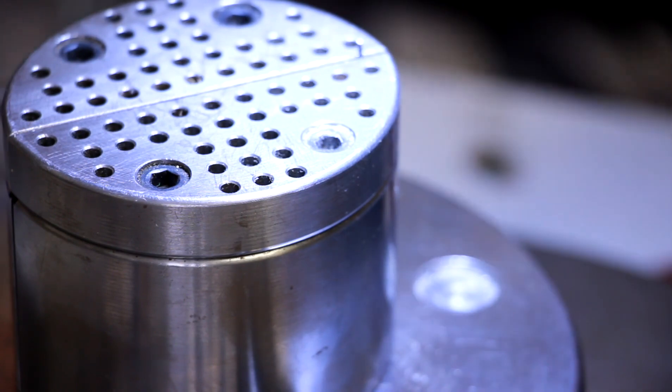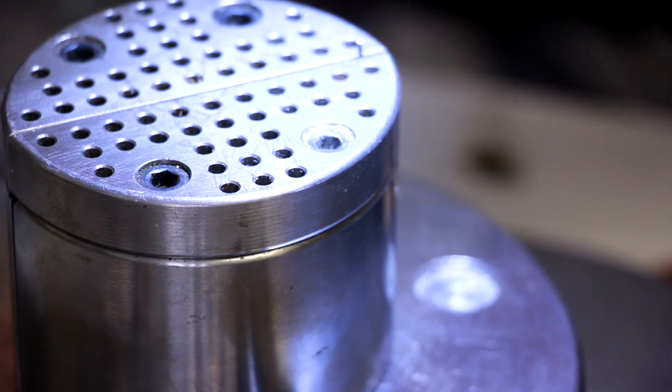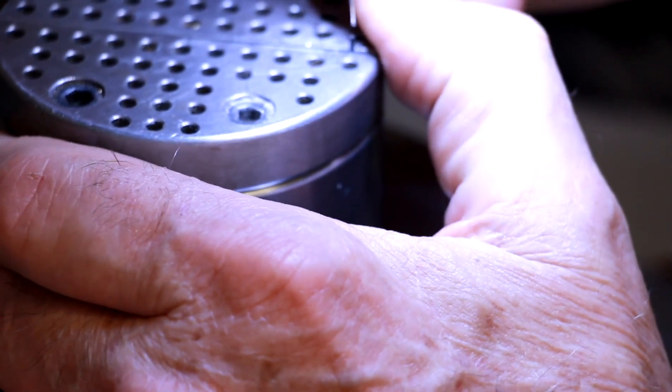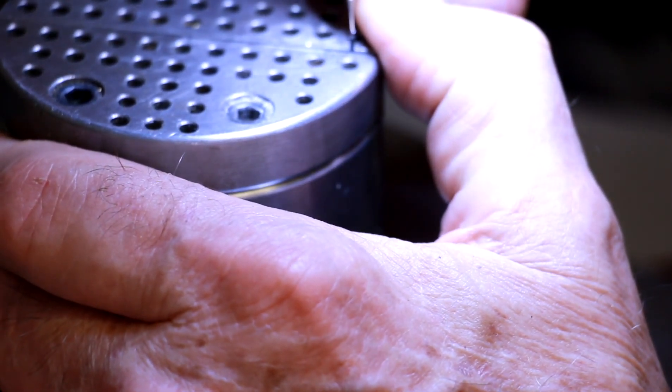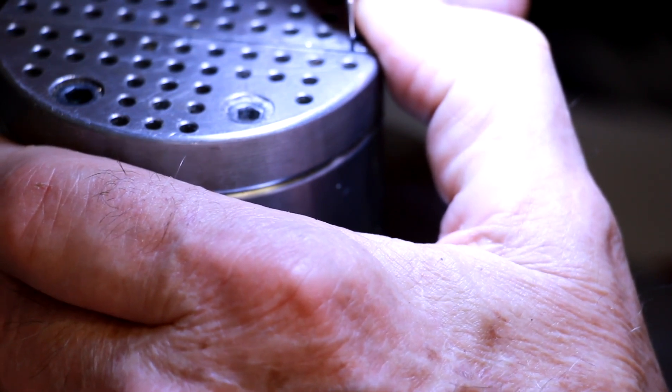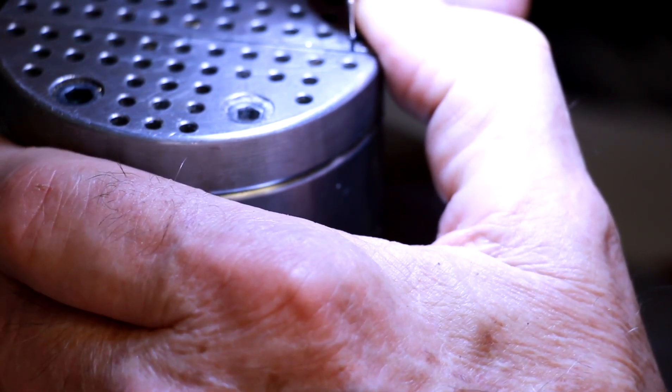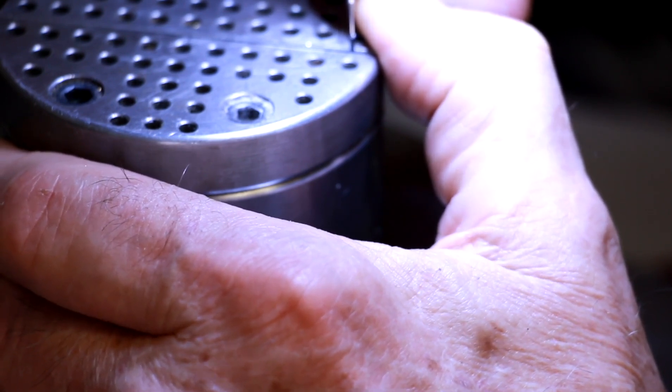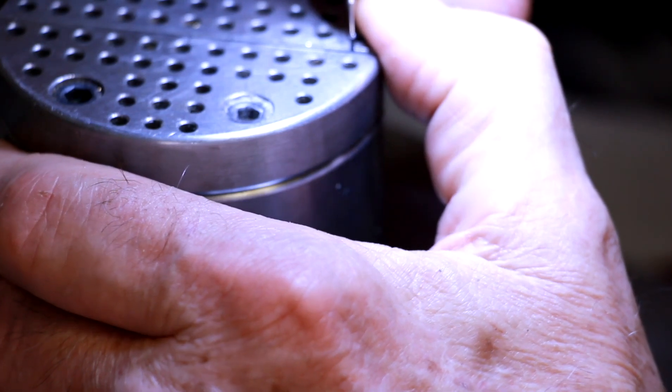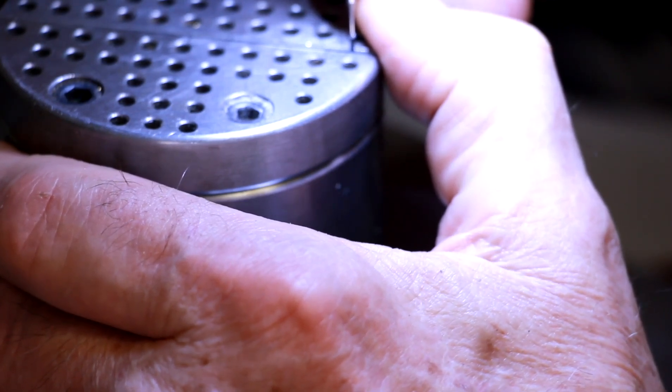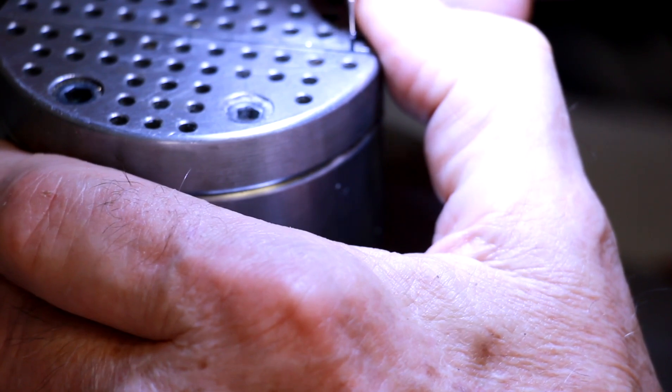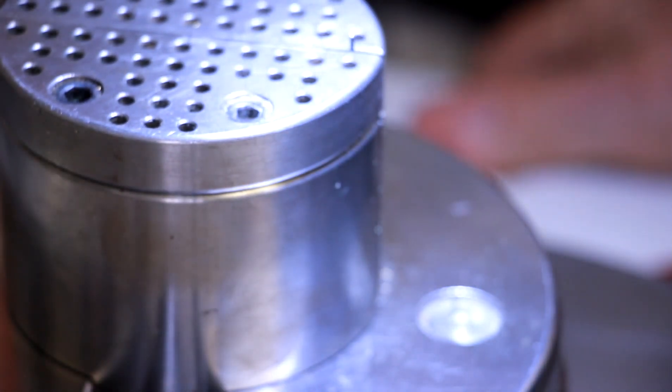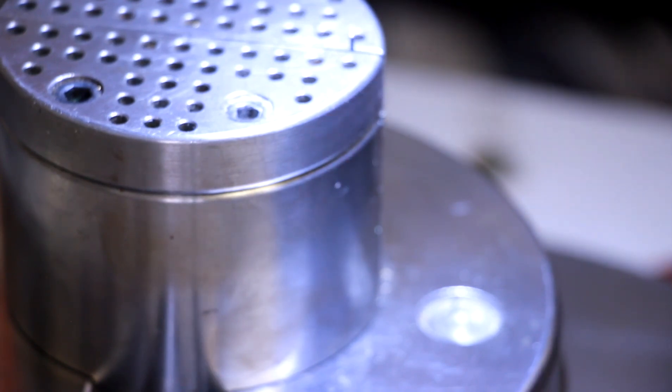With a ball end mill dental cutter, just a stock cutter, I'm going in the center and hollowing it out in the shape of a ball. Let's go to the whiteboard here a minute and let me show you what we're doing.